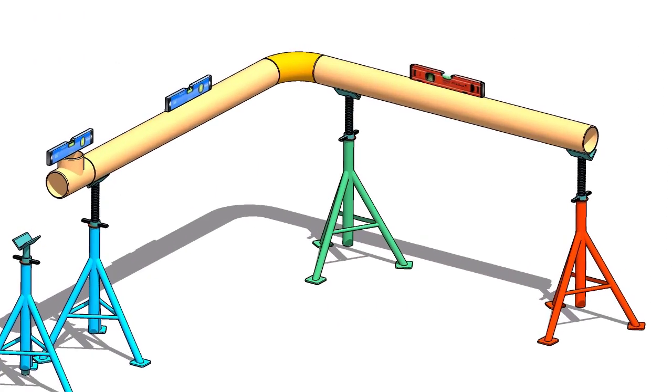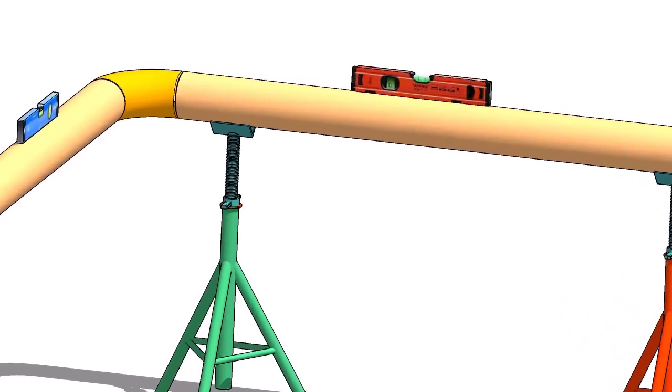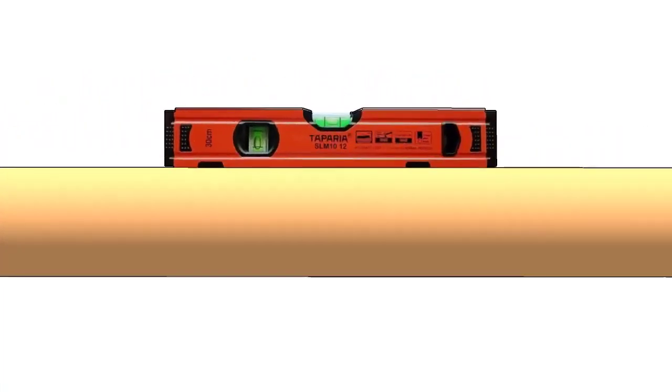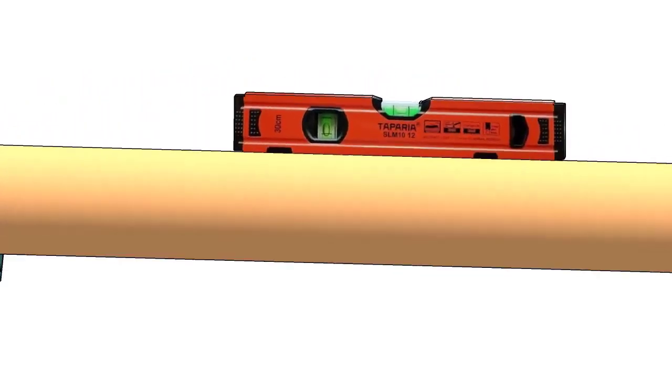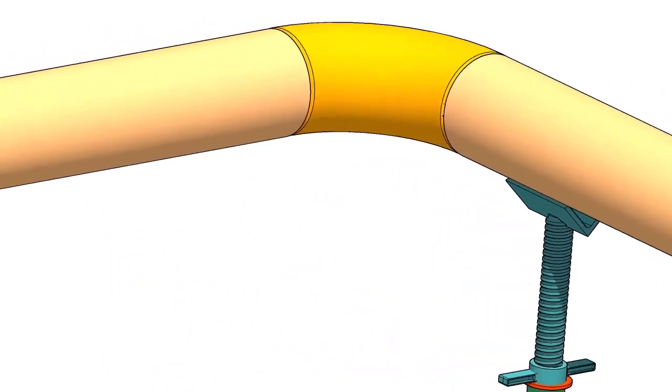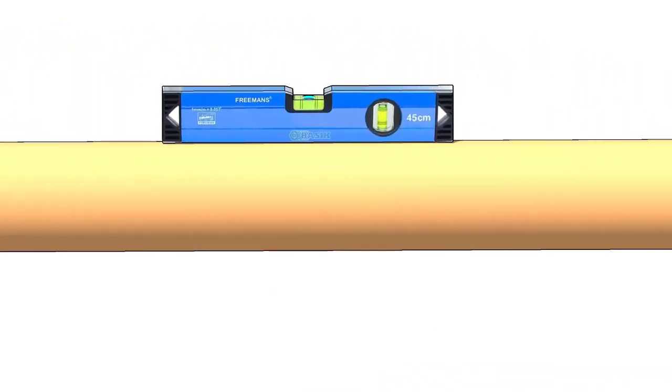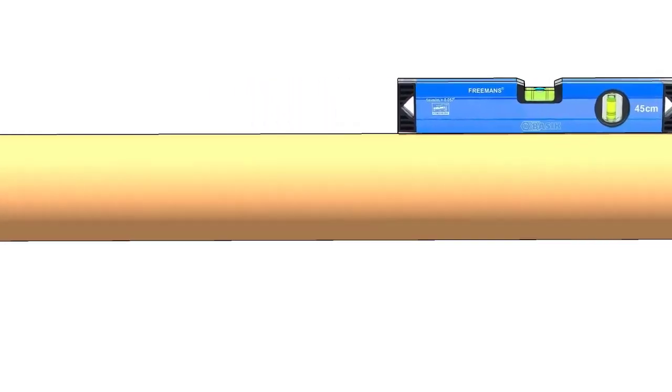First thing to do is to make sure the already fabricated spools dimension and level are acceptable. Mark the center lines of the tee and the elbow.